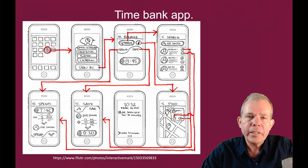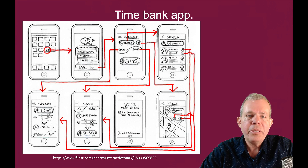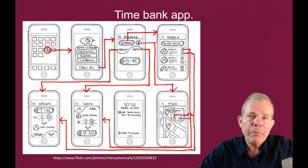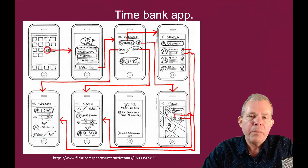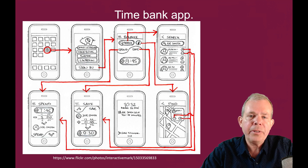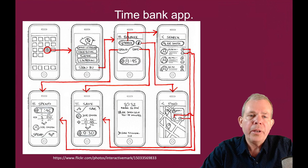Here's another example called the Time Bank app — a time management app where you can budget the amount of time you plan to spend on each task for each calendar day. You can borrow time from the bank, and when you run out, you stop and move to another task. This person has thought about each task the user plans to do, drawn it in pencil and paper format, and shown the navigation between screens.